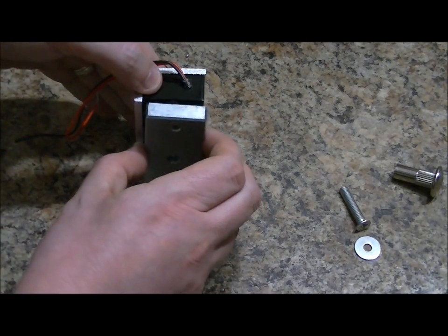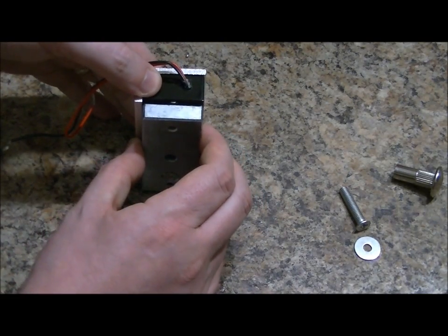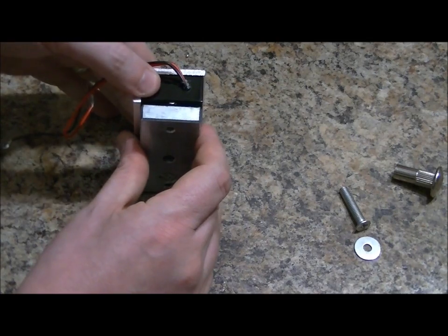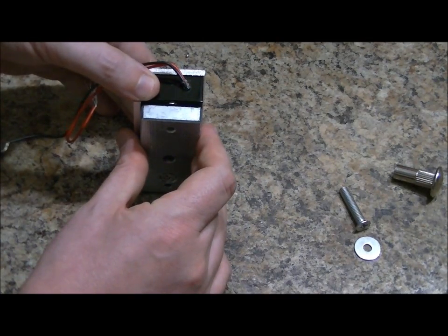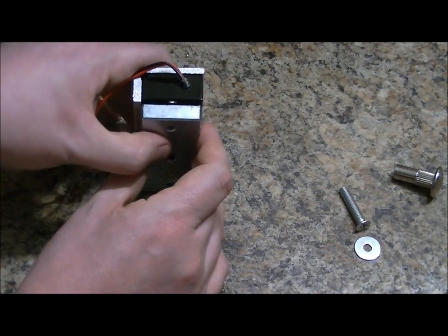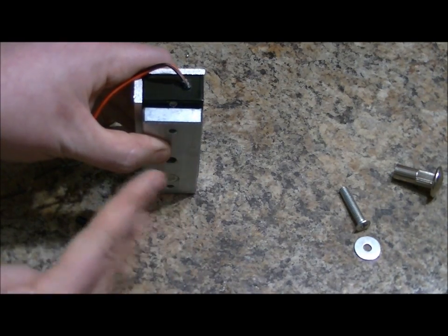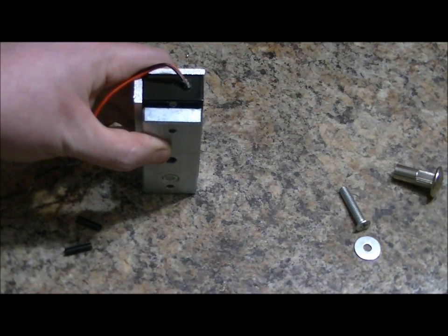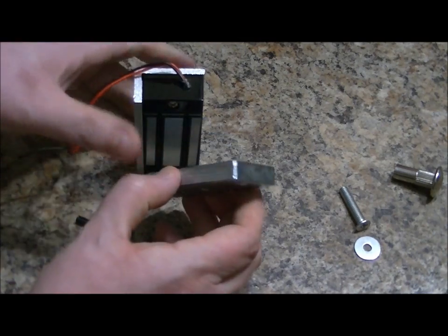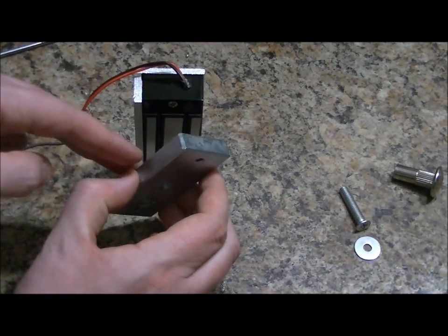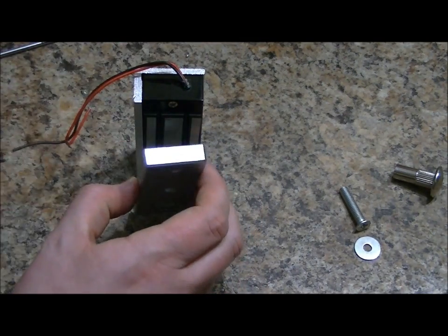Then what you would do is connect this as you want it to the electromagnet, apply power again so it stays on its own. Then you would close the door, bang the door closed on those two spacers, and that would leave two marks on your cabinet. Then you would remove power from the electromagnet, allowing for the bracket to come off.